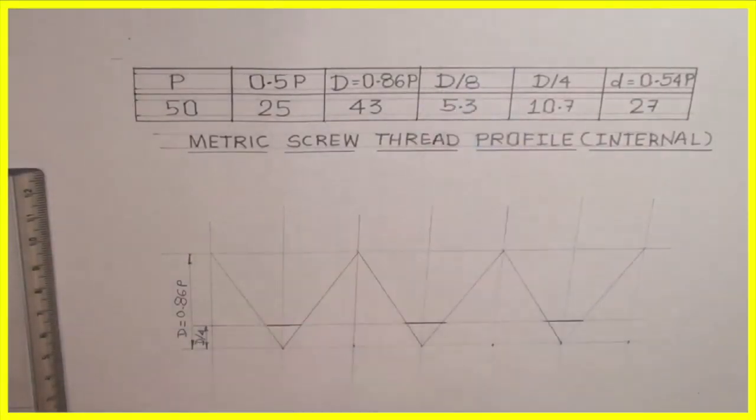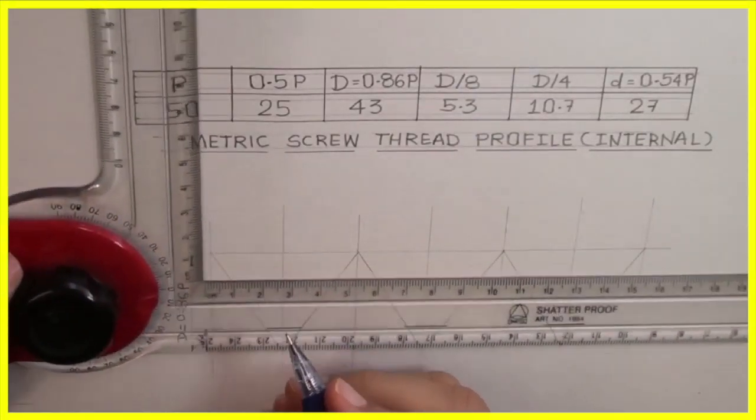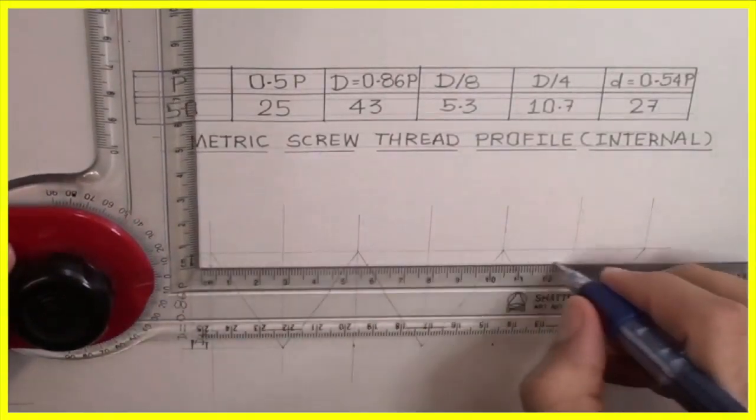Then we will mark d by 8, that is 5.3. So you take d by 8 from top, mark 5.3, and you draw a line.